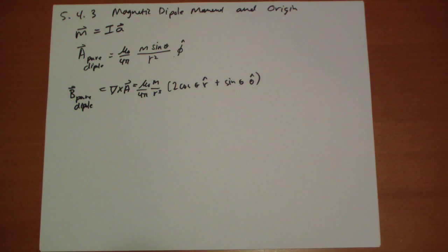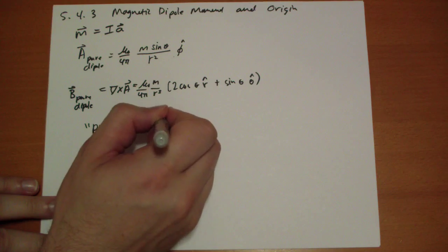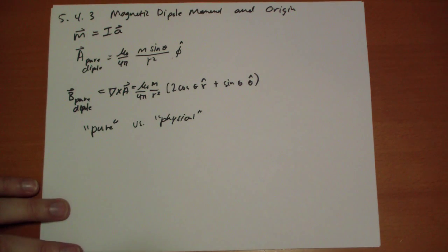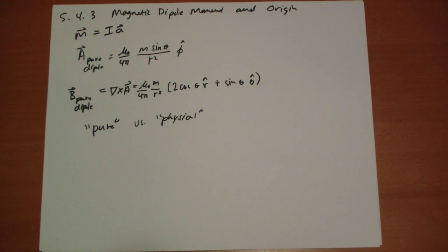Just trust me on this. And again, you have to think about what the difference between a pure dipole versus a physical. A physical dipole has an actual area, whereas a pure dipole has no area. It's the infinitesimal limit as the area approaches zero.